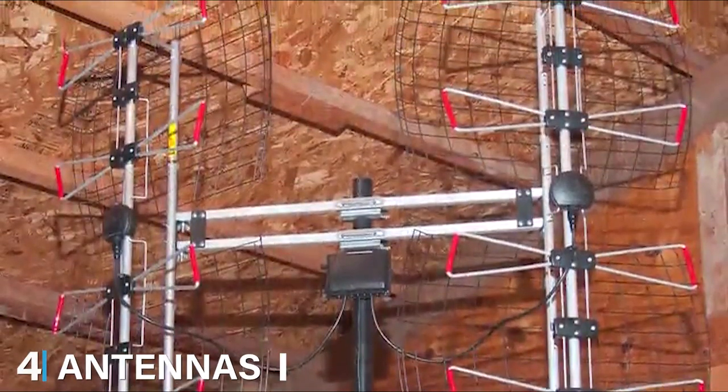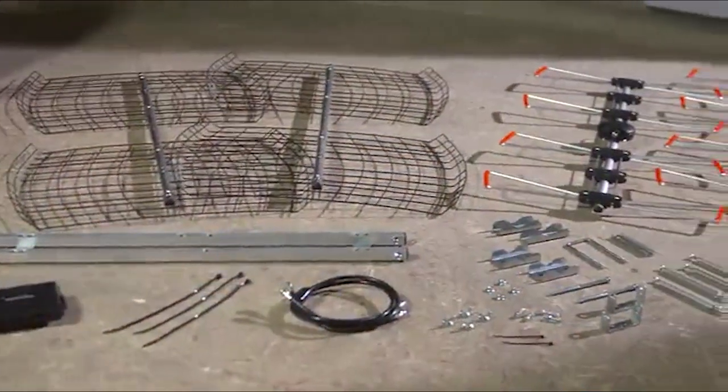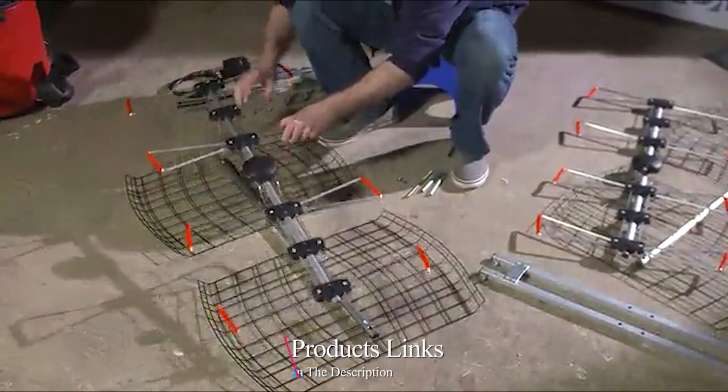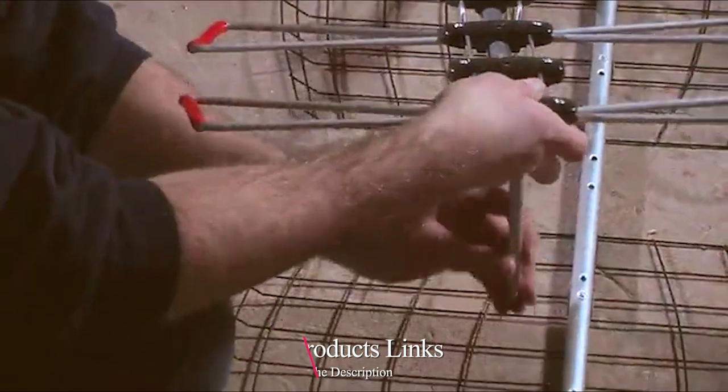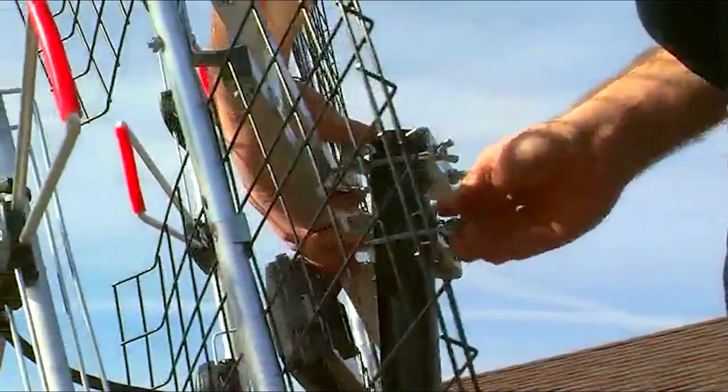Next at number four we have Antennas Direct DB8e Eight Element Bow Tie Attic/Outdoor HD TV Antenna. The decidedly retro-looking Antennas Direct DB8e Eight Element Bow Tie Antenna is actually a very powerful multi-directional outdoor antenna.